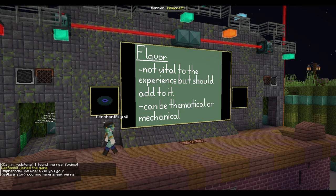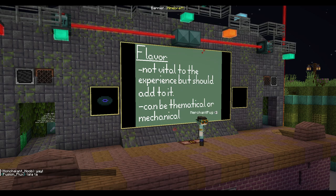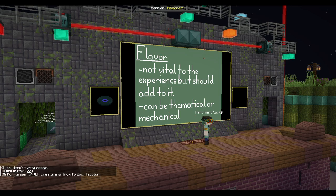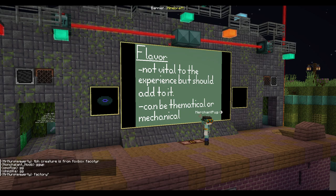So let's talk about flavor. Flavor is content that's not vital to the experience — this can be thematics or mechanics, like lore text for example. You want to make sure that flavor does not actively take away from the goal if you include it.